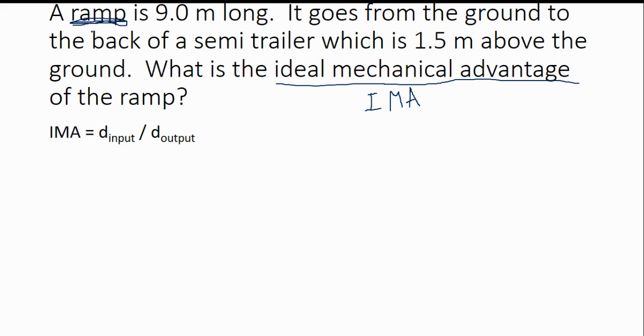Now, we're talking about a ramp. And if you guys recall, in one of my review slides from before spring break, I gave you kind of a cheat sheet on how you know what is the input, what is the output for different machines. So for a ramp, the input is going to be how long the ramp is. So our input is going to be 9 meters. And our output for a ramp, the distance output for a ramp is how high off the ground it comes.